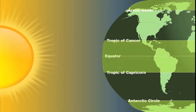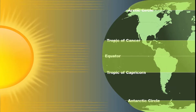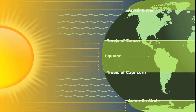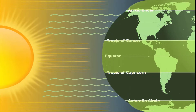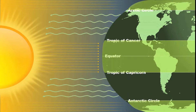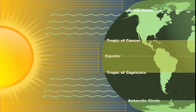Although the earth as a whole maintains a balance between incoming solar radiation and outgoing terrestrial radiation, the energy received at different latitudes is not the same.